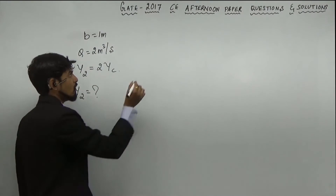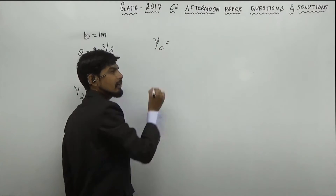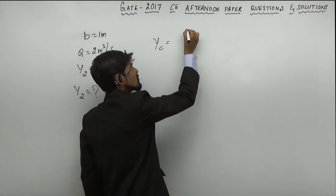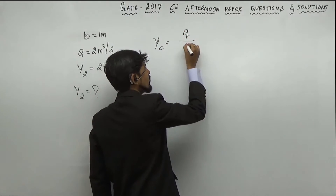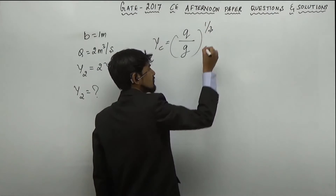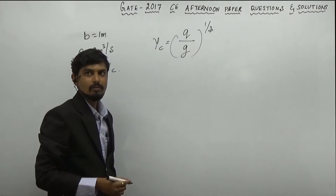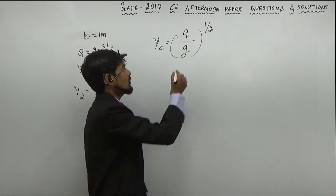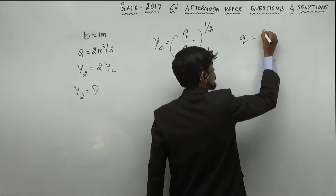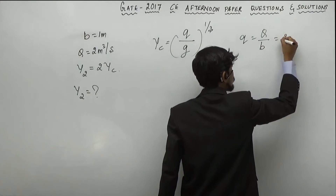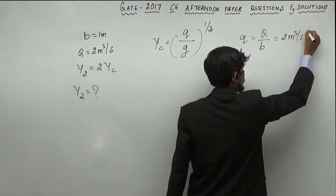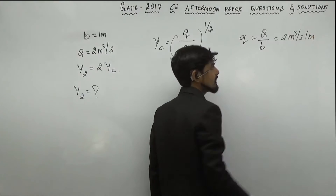Now, for a rectangular channel, the critical depth of flow Yc is equal to (q squared divided by g) raised to the power 1 by 3. Here, small q is equal to capital Q divided by B, which equals 2 meter cube per second per meter width.